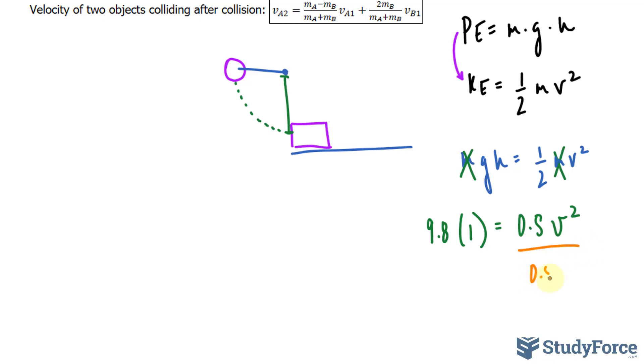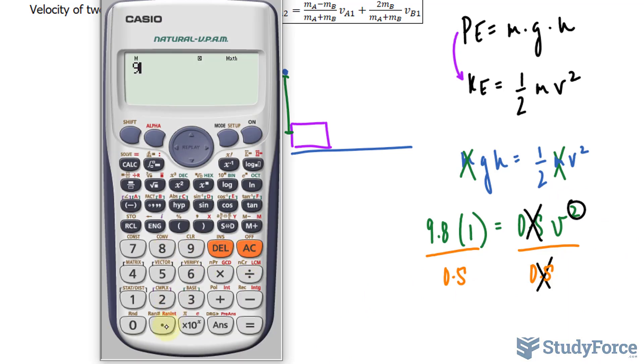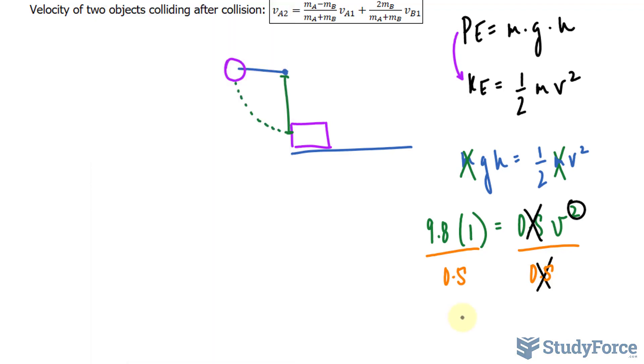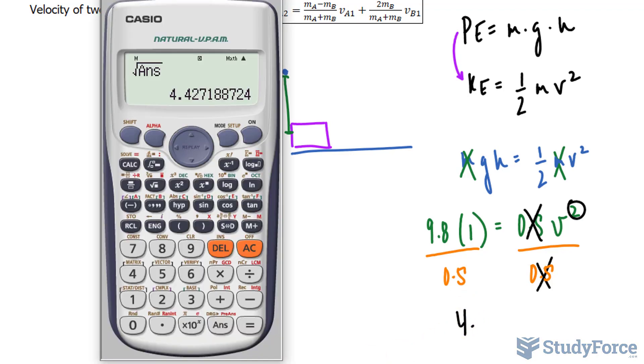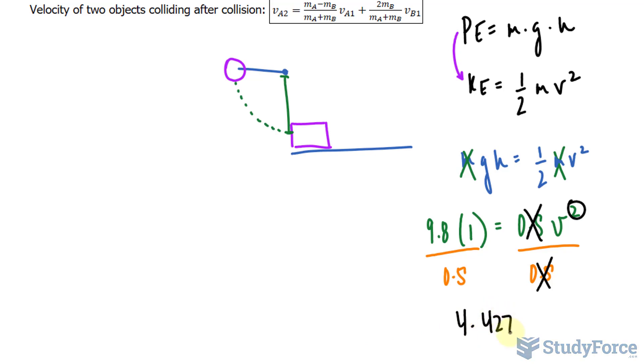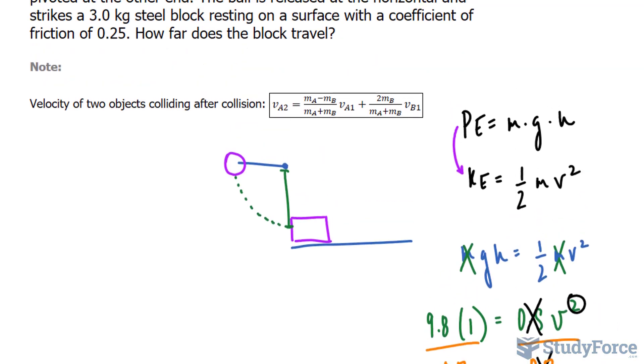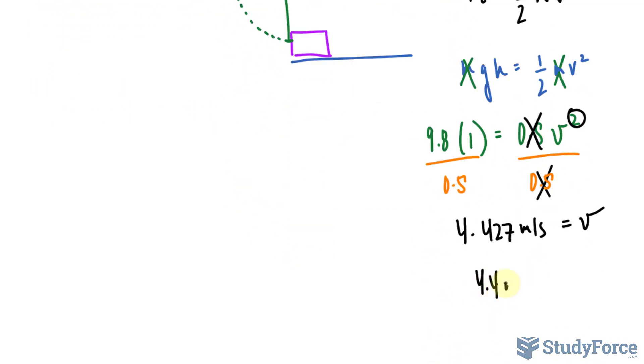We can do that by dividing both sides by 0.5, that will cancel out this and that, and then subsequently square root both sides to get rid of this power of two. 9.8 divided by 0.5, and we square root to get 4.42. Now you should get two values, one that's positive and one that's negative, but we will be using the positive version. So 4.427 meters per second is the velocity. And of course you can round this to 4.4 meters per second if you like.